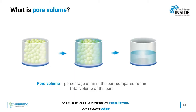The second main characteristic of a porous component is pore volume. Pore volume is the percentage of air in a part compared to the total volume of the part. If you take a jar of marbles and fill the void spaces with liquid, then remove the porous structure, the liquid that remains represents the percentage of volume of your part that was open or porous.